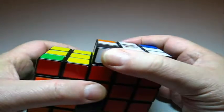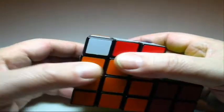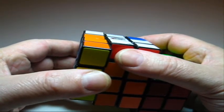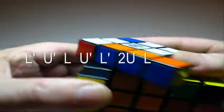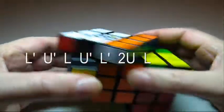And you got the white on the left side, so you gotta do the left algorithm. So you gotta turn the thing around and you do your left algorithm, which is left inverted, up inverted, left, up inverted, left inverted, up up, left.